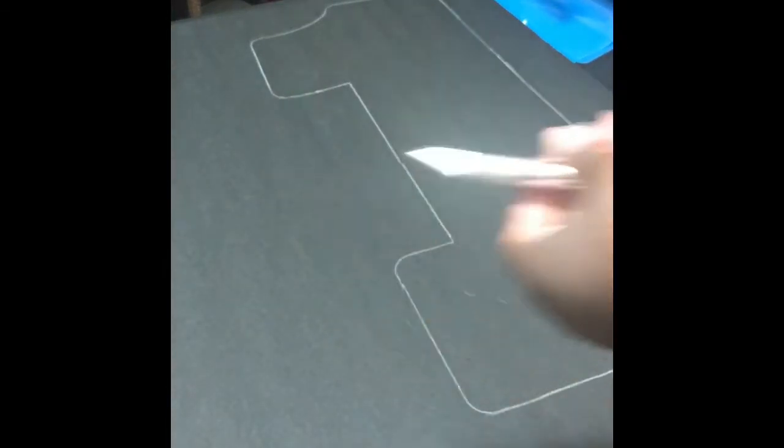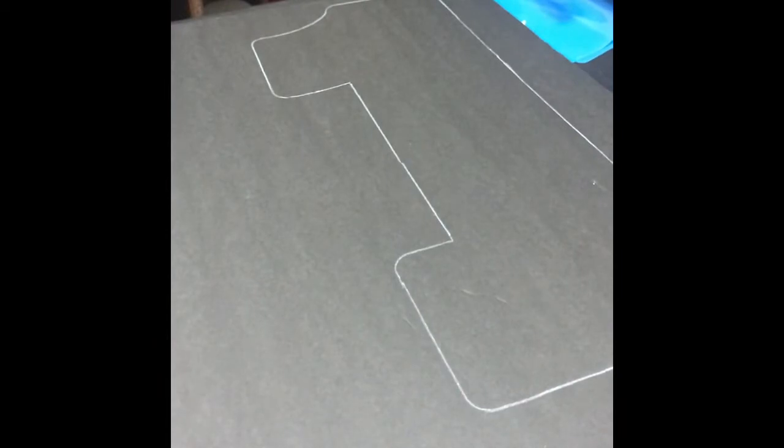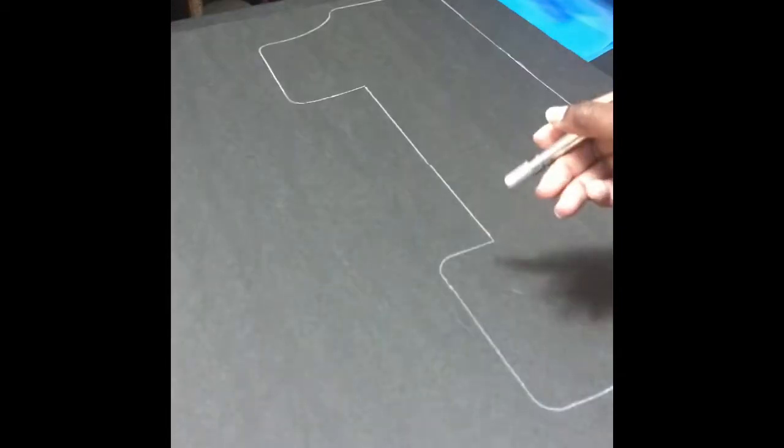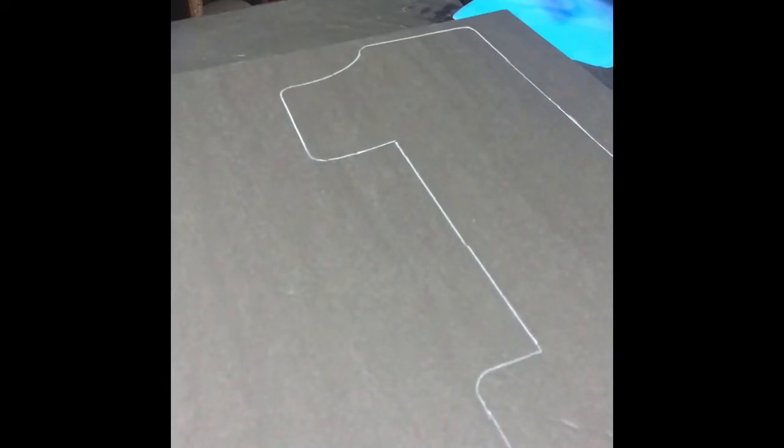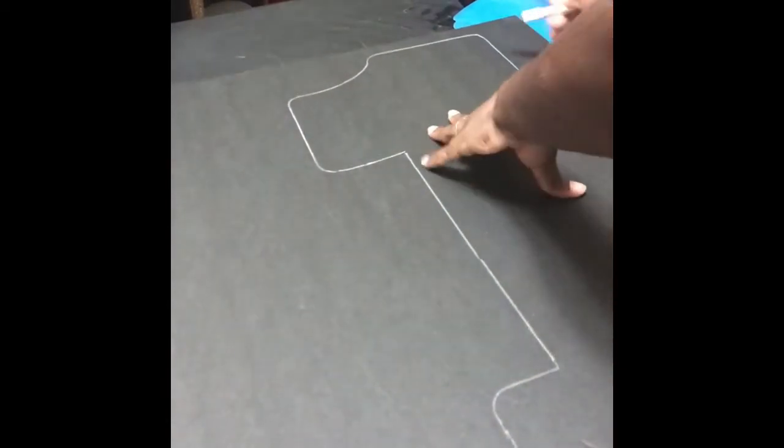Now you're going to take your, um, I think this is called a scalpel, or whatever tool. You can find these at Dollar Tree. And you're just going to go around the lines. So, I'm going to start with the straight line first, because it's easier for me.